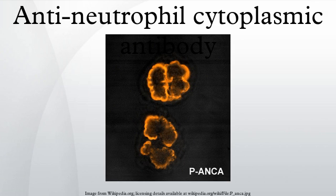ELISA, enzyme-linked immunosorbent assay, is used in diagnostic laboratories to detect ANCAs. Although IF can be used to screen for many ANCAs, ELISA is used to detect antibodies to individual antigens. The most common antigens used on an ELISA microtitre plate are MPO and PR3, which are usually tested for after a positive IF test.